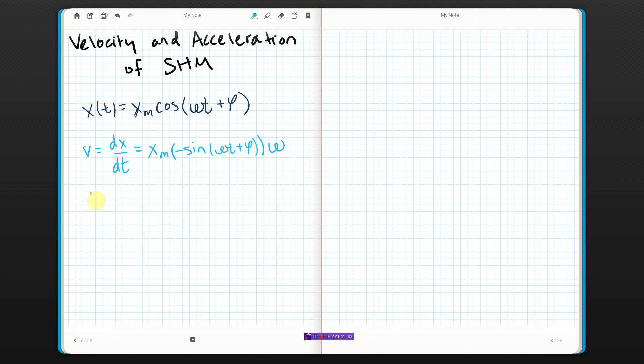We're just going to move some stuff around and simplify it slightly. You get that the velocity as a function of time is... I'm going to pull this out to the front and the negative out to the front. So I get negative angular frequency times the amplitude times the sine of angular frequency times time plus the phase angle, phase constant. Okie dokie. So that's the velocity.